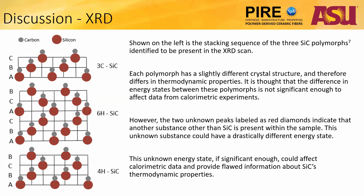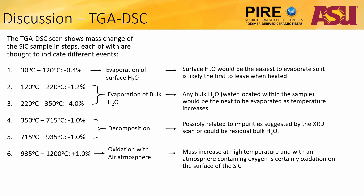Also previously mentioned in the XRD scan are the two unidentified peaks labeled as red diamonds. Because these peaks did not match any SiC reference scans, it suggests that compounds other than SiC could be present within the sample. With unknown other compounds present, their different energy state could be enough to alter the heat of formation, thus giving an inaccurate value and flawed understanding of SiC's thermodynamic properties.